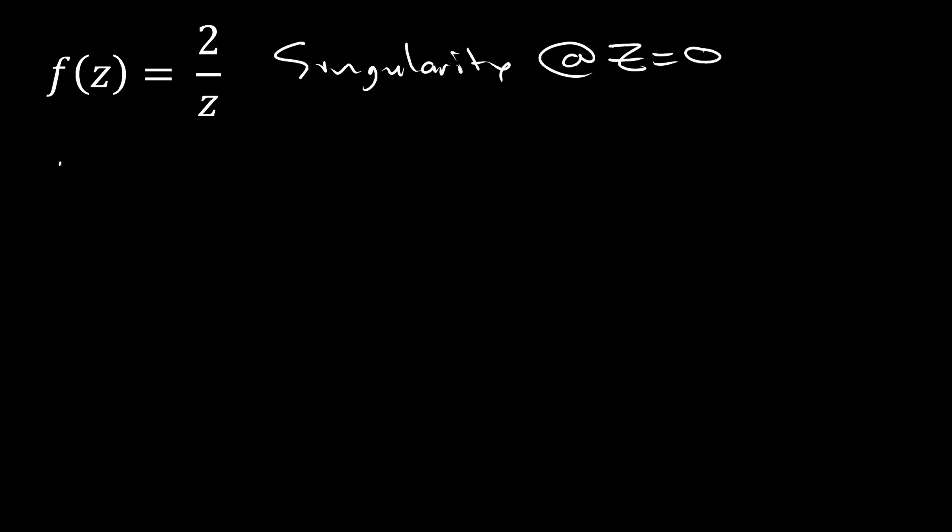So, to find the residue at z equals zero of our function, we'll just take the limit as z goes to zero of z minus zero, which is just z times two per z. Well, this is just, these z's are going to cancel out. And so, we're just going to be left with two. There's no z to take to zero, so this is just two.